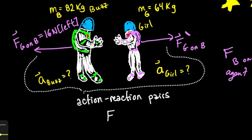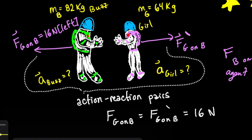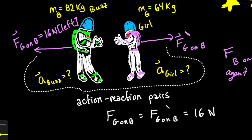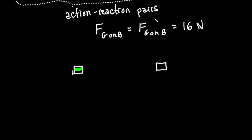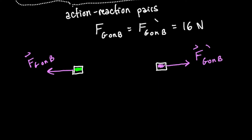Since they're floating in outer space, we assume no other forces act on them except the forces between the two. We'll draw a free body diagram for each astronaut separately — Buzz on the left and the girl on the right. Buzz has only one force acting on him: the force of the girl on Buzz. The girl has only the reaction force acting on her. We then apply Newton's laws for each mass separately to find the net force on Buzz and separately the net force on the girl.